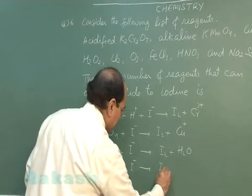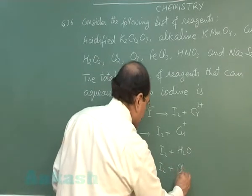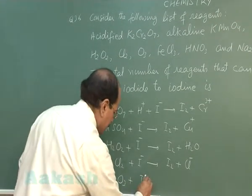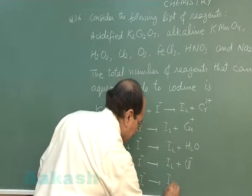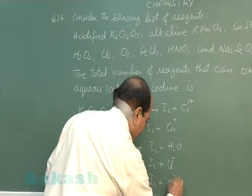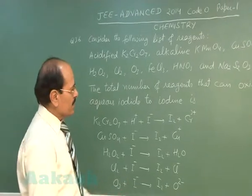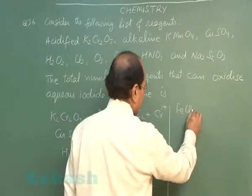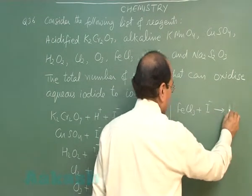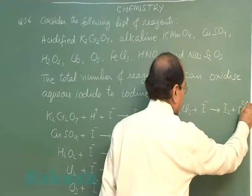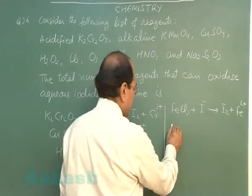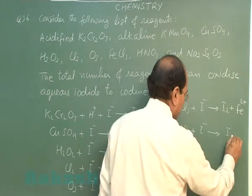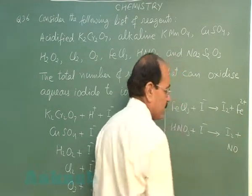Chlorine oxidizes iodide ions to iodine and itself gets reduced to chloride ions. Ozone oxidizes iodide ions to iodine and itself gets reduced to oxide ions. Ferric chloride and nitric acid also oxidize iodide ion to iodine. Ferric chloride itself gets reduced to ferrous ion, and nitric acid itself gets reduced to nitric oxide.